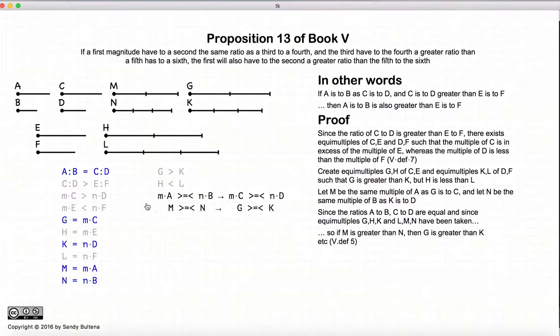Now, since m times a is equal to m and n times b is equal to n, so on and so forth, what we have is if m is greater than n, g is greater than k. But we've drawn our lines such that g is greater than k. So if g is greater than k, that also means that m is greater than n. So now we have this condition we know to be true: m is greater than n.